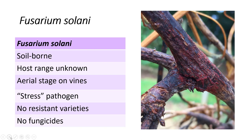On badly affected plants and under humid conditions, the fungus can produce red spores on stems like those seen in this photo. We don't know how much disease these spores can cause, but we treat them as if they are a major source of spread of the disease. It's important to note there are no resistant varieties and fungicides don't work against this disease.